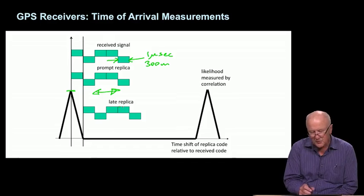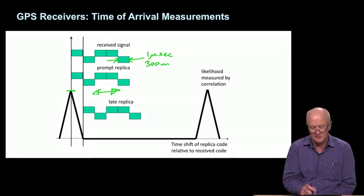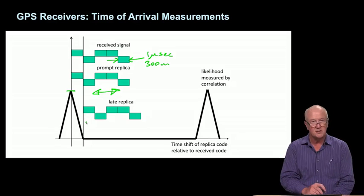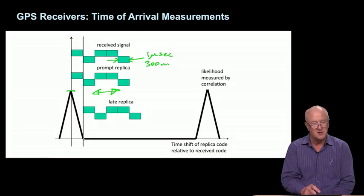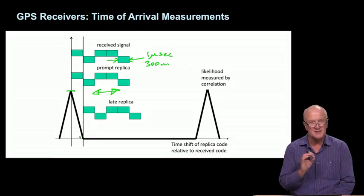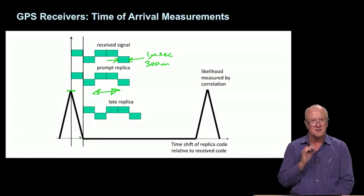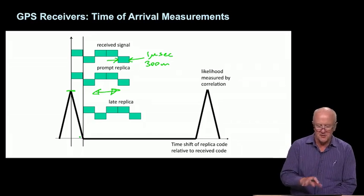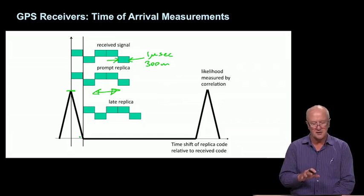All the plus ones would be aligned with plus ones, all the minus ones with minus ones. If you multiplied that, plus one times plus one is one, minus one times minus one is also one, and you sum them all up, you would get a correlation peak. That would indicate to you that your prompt is synchronized with the incoming. In contrast, if your replica is misaligned, here we show one that's late by one whole chip, then the correlation will be very weak. This is by design.